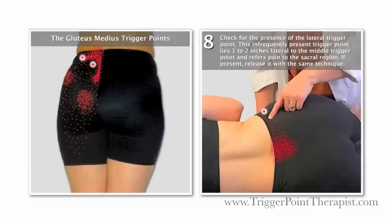Now we'll check for the presence of the lateral trigger point. This infrequently present trigger point lies one to two inches lateral to the middle trigger point and refers pain to the sacral region. Although I rarely see this in practice, I do check for it. If present, release it with the same technique.